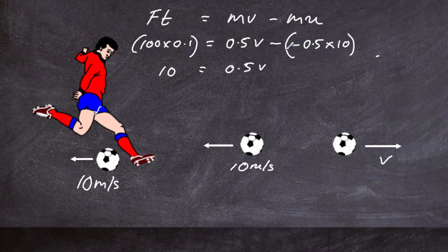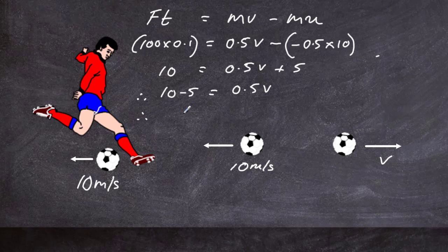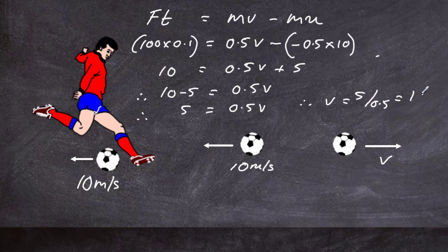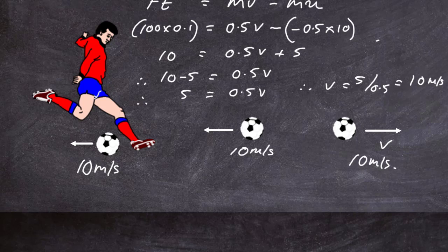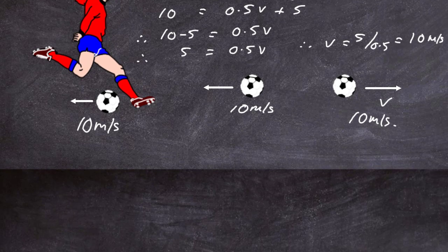So: 10 = 0.5v − (−5), which gives 10 = 0.5v + 5. Rearranging: 5 = 0.5v, therefore v = 5 ÷ 0.5 = 10 m/s. The ball moves away at only 10 m/s this time. That means the ball is not going to go as far as the one kicked from rest at 20 m/s. We've found an anomaly — with a ball approaching at 10 m/s and the same impulse, the ball goes slower, not faster.